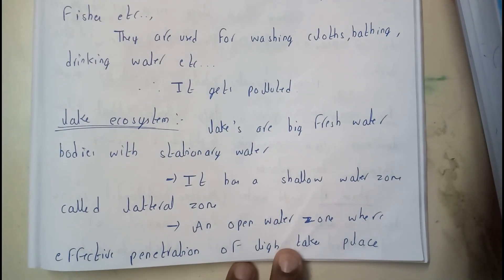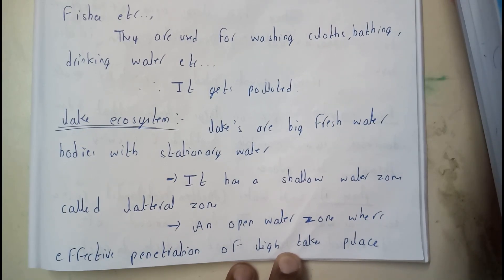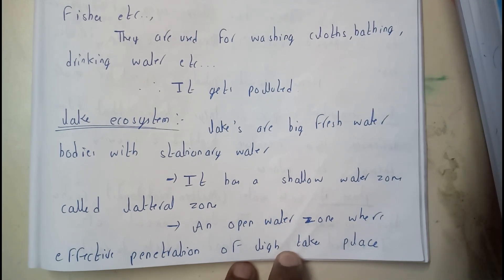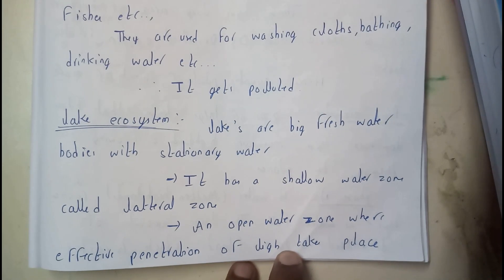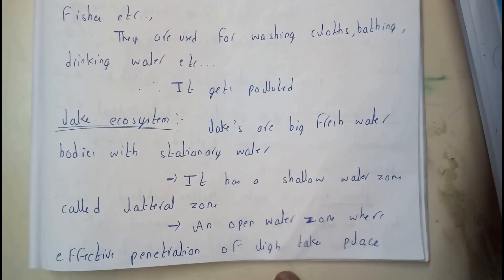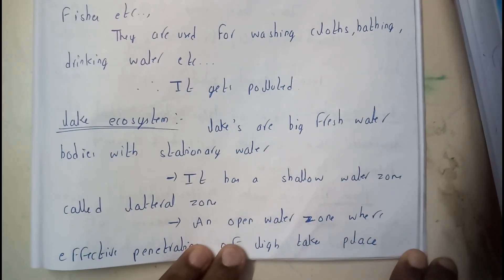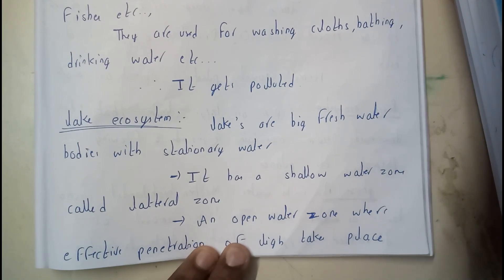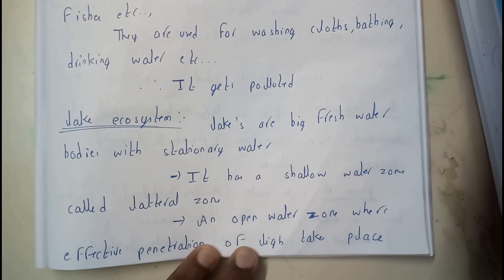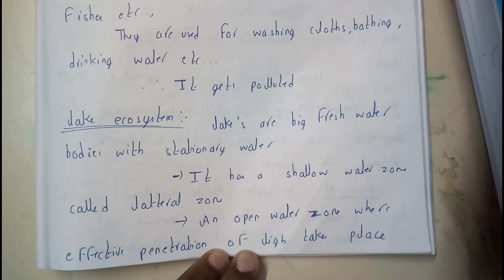Now let's go through lake ecosystem. Lake also comes under lentic, which means stationary, so lakes are big freshwater bodies with stationary water. Lakes are divided into some zones — there are three major zones. The first zone is the shallow water zone, called the littoral zone, which is the uppermost zone.